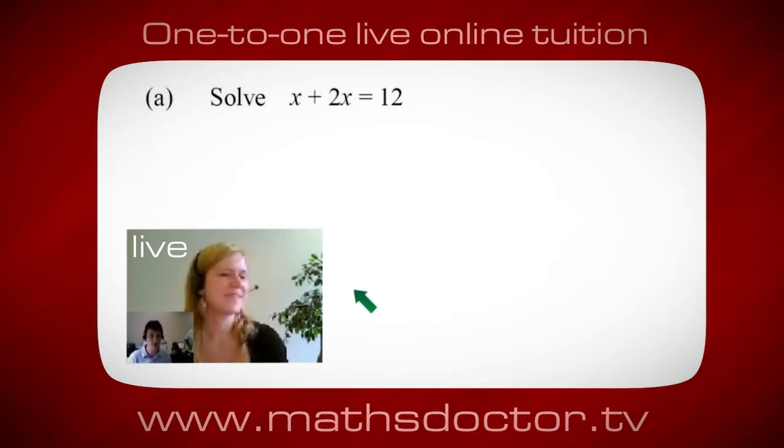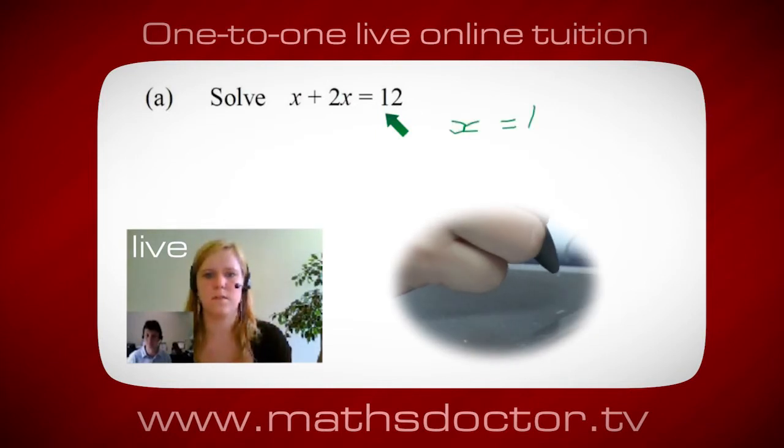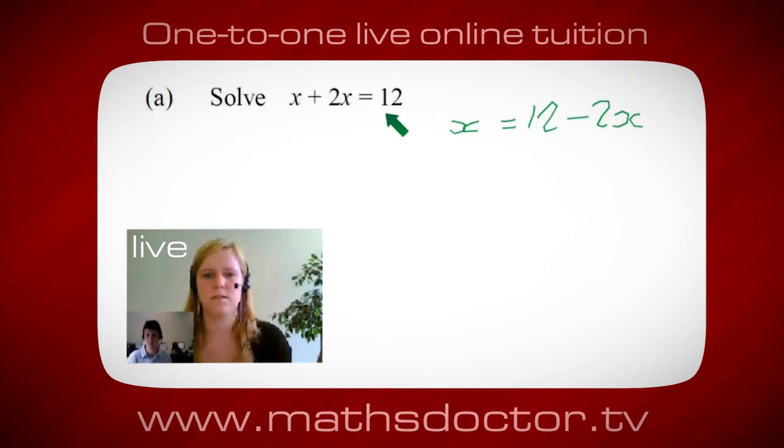OK Marie, so let's have a look at this one. So solve x plus 2x equals 12. So what do you think you do first? OK, well, I want x on its own. So I would put x equals 12 minus 2x. OK, so a lot of the time we want to get x by itself. But what we want to do first is get all of these x's together. So can you see anything we can do with this? Get all these together in one place.